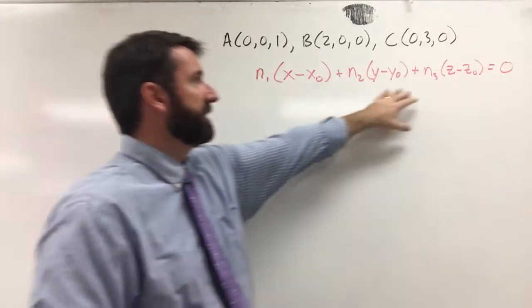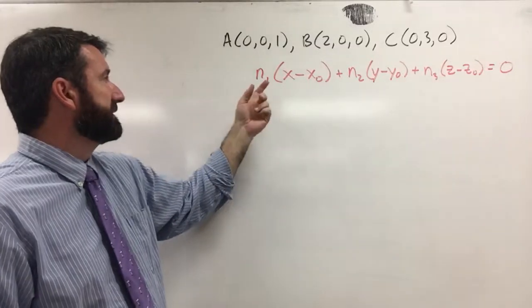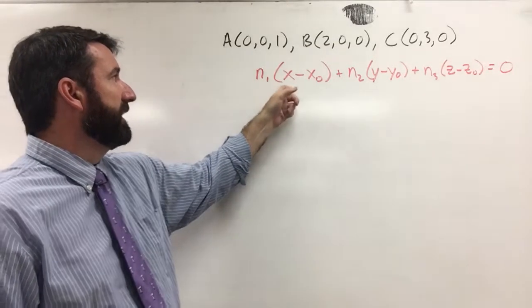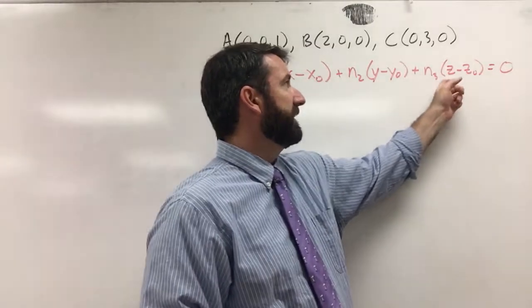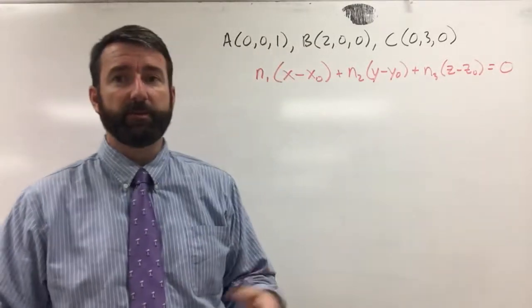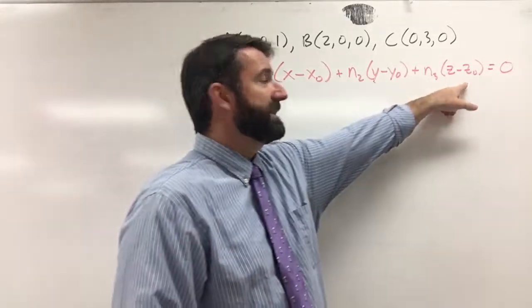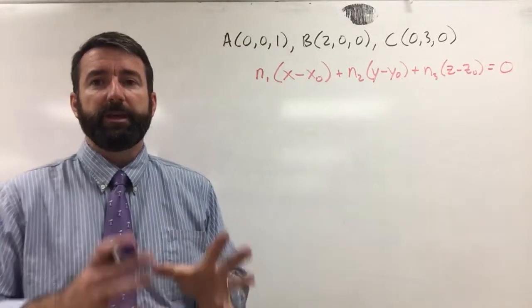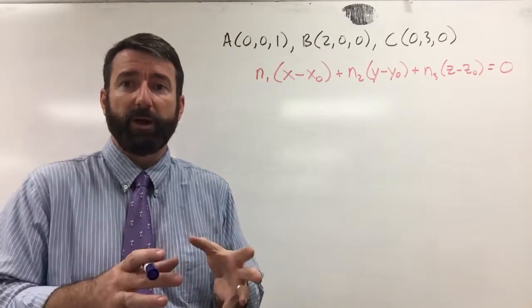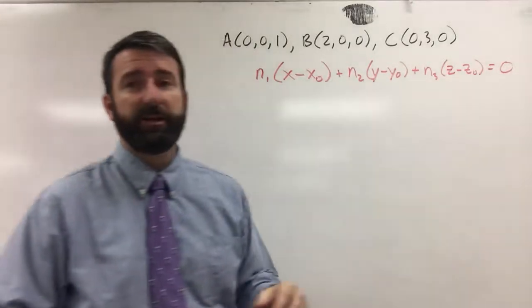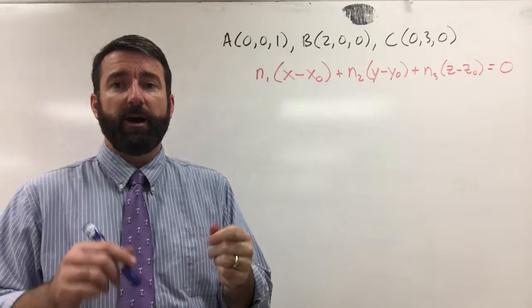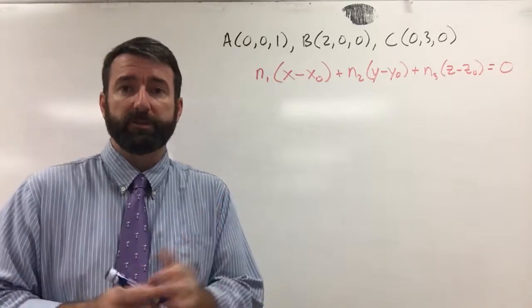The formula that we're going to use is this here. n1 times x minus x0 plus n2 times y minus y0 plus n3 times z minus z0 equals zero, where x0, y0, z0 are the coordinates of some point on the plane, and n1, n2, n3 are the components of a vector that's normal to the plane.